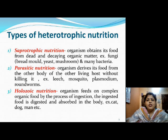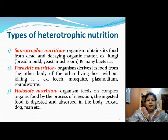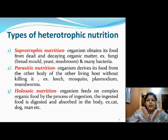Then parasitic nutrition — organisms which derive food from another living host without killing it. The parasite derives food from the host. There are two kinds: ectoparasites, which live on the body of the host, such as leech and mosquito; and endoparasites, which live inside the body of the host, such as Plasmodium and roundworms. Roundworms live inside the intestine and eat the digested food, causing the person to feel hungry all the time.